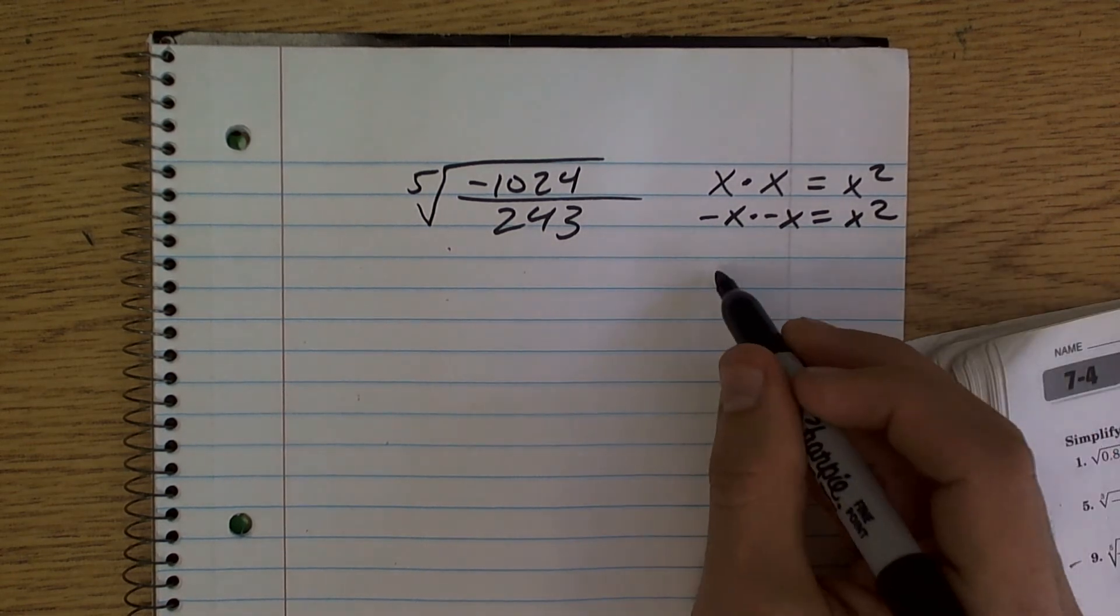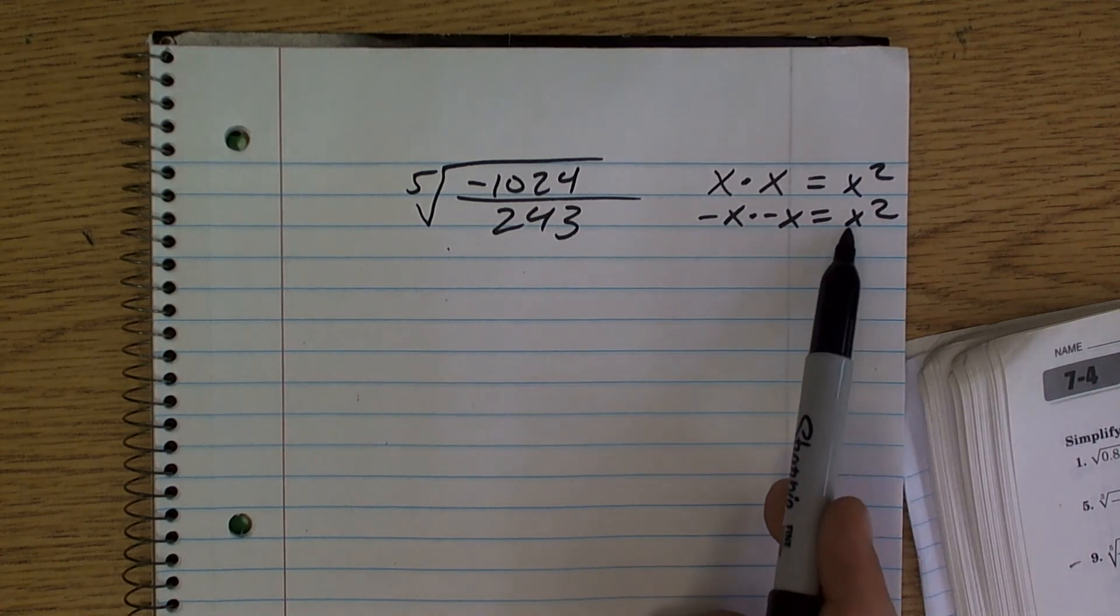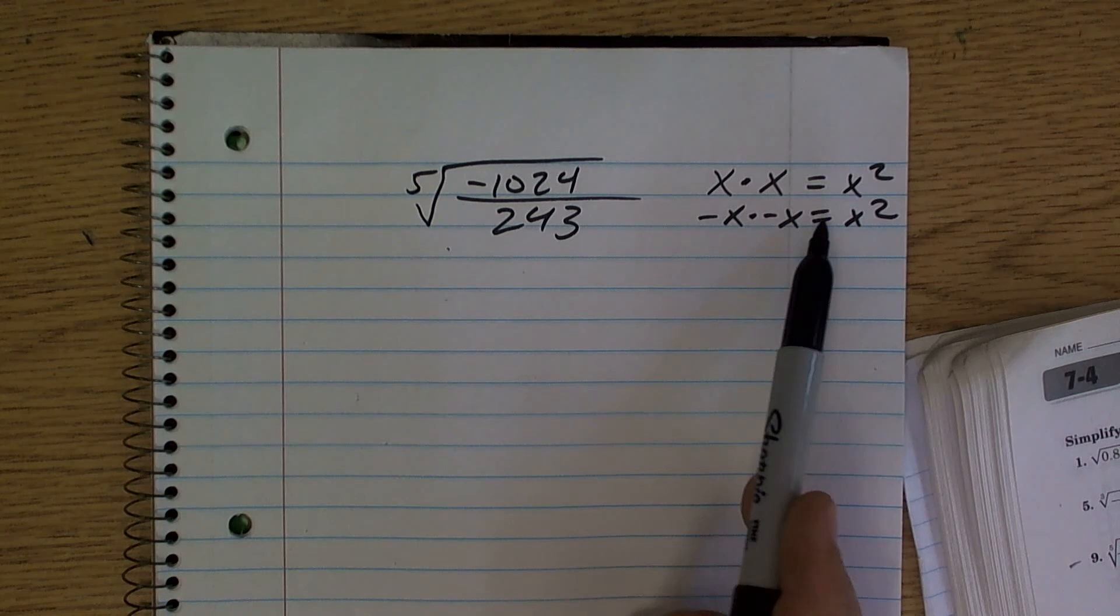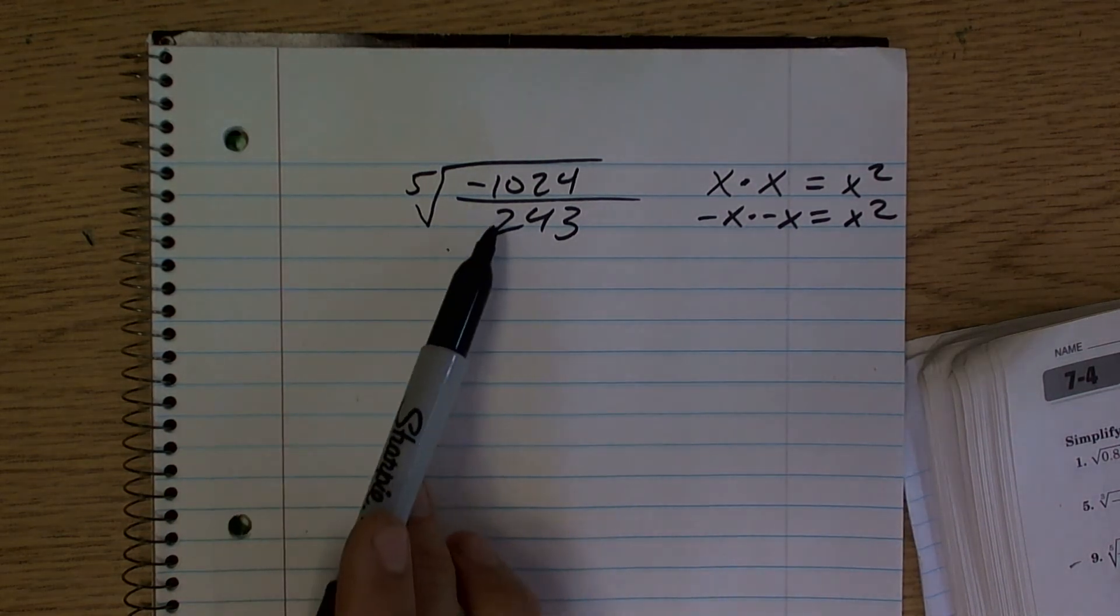Whenever taking a square root, it's always either double positive or double negative. You can never make it a negative x squared with them being the exact same number. So just remember, whenever you have an odd root, you can take the odd root of a negative number.